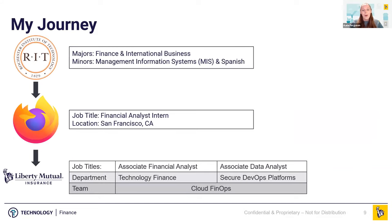Let's talk about my journey and what led me to be talking with you today. I went to college at RIT in upstate New York and majored in finance with a minor in MIS, or Management Information Systems. It was there that I began learning how coding could be used in a business context. And even though I am by no means a master coder — I more so dabble in it — I've been really proud of the impact it's had in my career in such a short amount of time.